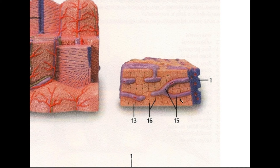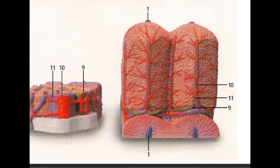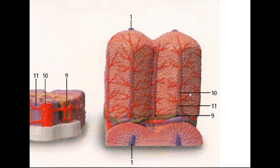Number one is the central vein, and number fifteen are your liver sinusoids. Remember that the sinusoids drain into the central vein. Number sixteen, very difficult to see but located between the hepatocytes, is your bile canaliculi. Number thirteen is the hepatocyte. Number nine is your interlobular bile duct, visible in green. Number ten is your interlobular artery, and number eleven is the interlobular vein — visible as the purple region.